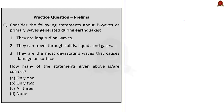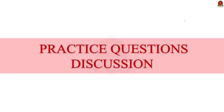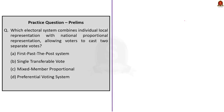We have four practice prelims questions today. The first question: which electoral system combines individual local representation with national proportional representation, allowing voters to cast two separate votes? From our discussion, we know that the correct answer is option C — the mixed member proportional representation system.